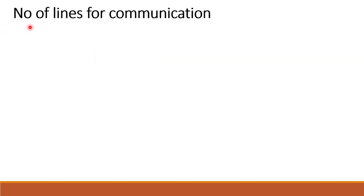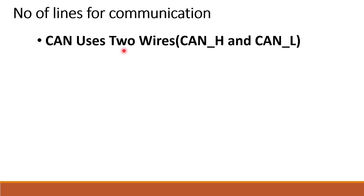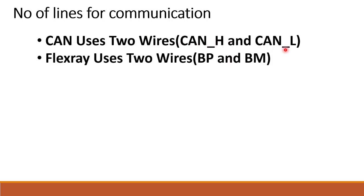Next, we will check the number of wires used for communication in FlexRay and CAN networks. CAN uses two wires: CAN High and CAN Low. FlexRay also uses two wires, but they are called Bus Plus and Bus Minus.